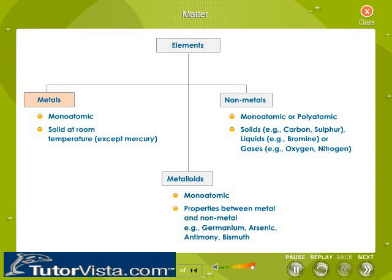There are 112 known elements, though scientists have reported discovering more. Metals are monoatomic, and all metals are solids except mercury, which is a heavy silvery liquid at room temperature. Nonmetals are mono or polyatomic and can exist in solid, liquid, or gaseous states at room temperature. Metalloids are monoatomic elements — like arsenic, antimony, and germanium — that have properties of both metals and nonmetals. Metalloids are semiconductors and can pass current when some impurity is added to them.